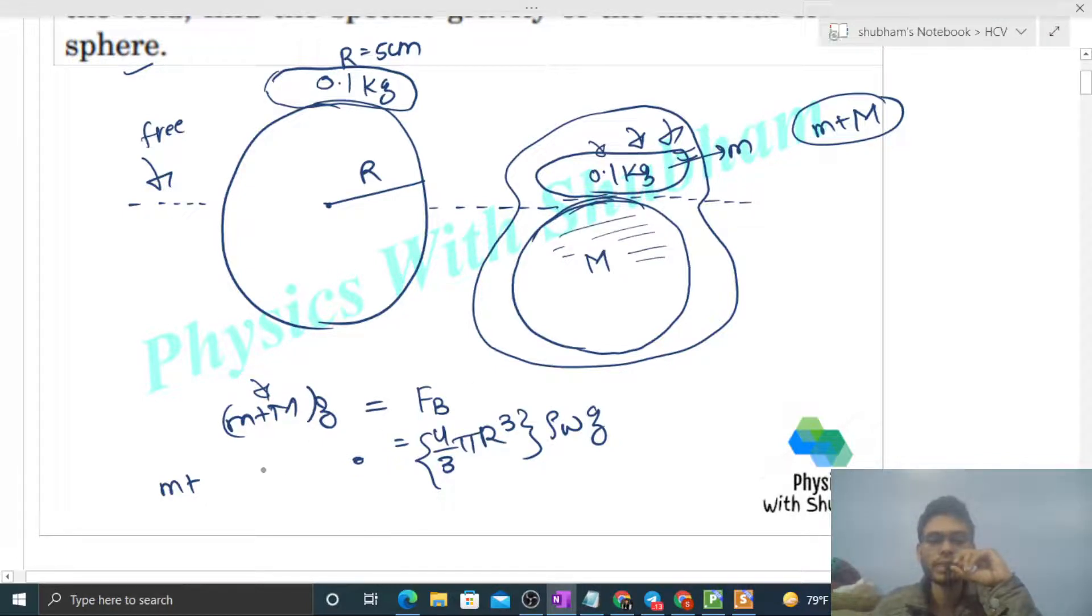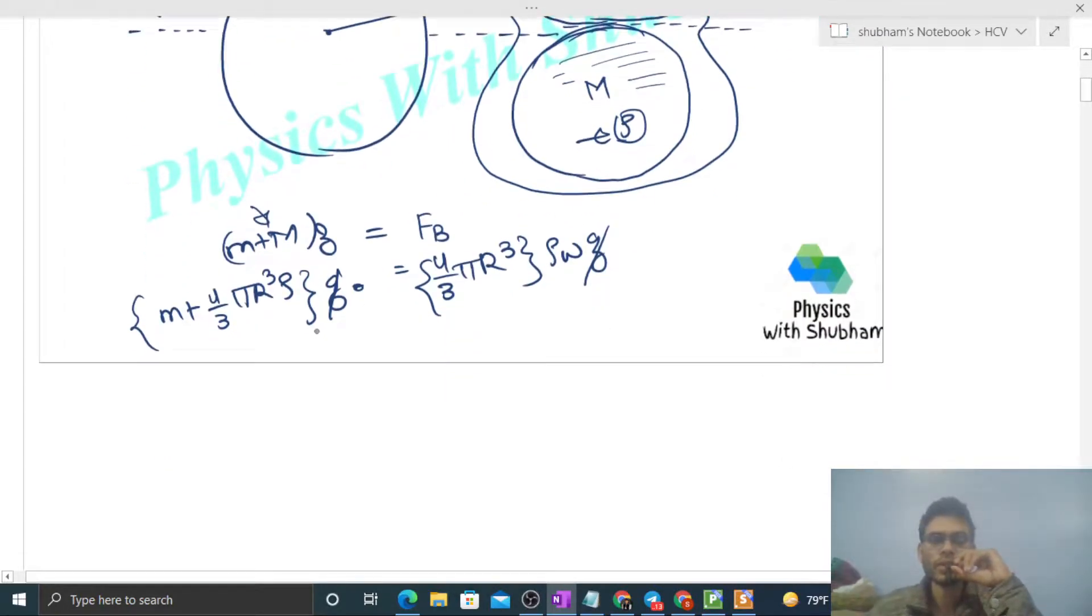This is the value of buoyancy force that will be equal to small m plus capital M. Capital M is the mass of this solid sphere, that will be volume into density. Volume will be 4 by 3 pi R cube into density, let's say density rho, because we have to find out the density of this solid sphere, into G. So you can see here G cancels out. And we need to find out rho. So 4 by 3 pi R cube into density of water minus small m divided by 4 by 3 pi R cube, that is the value of density of the solid sphere.